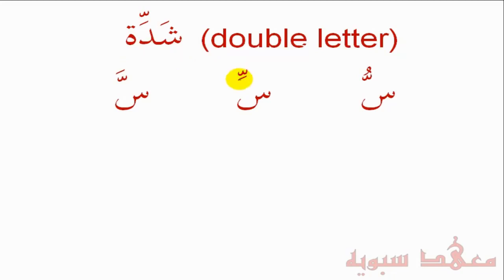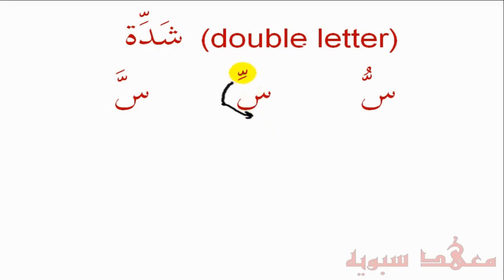One point: the Kasrah is usually written under the Shaddah, or it can actually be written underneath the letter itself — so the Kasrah can go below the letter as well, but the Shaddah stays on top. The Shaddah will never be on the bottom. Another point is that the Shaddah can go on any letter except for the Hamzah or the Alif, so any other letter can accept a Shaddah.